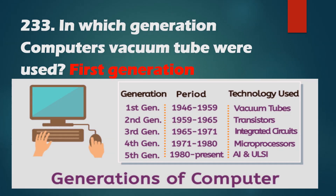Question No. 233: In which generation of computers were vacuum tubes used? First generation used vacuum tubes, second generation used transistors, third used integrated circuits, fourth used microprocessors, and fifth uses artificial intelligence.